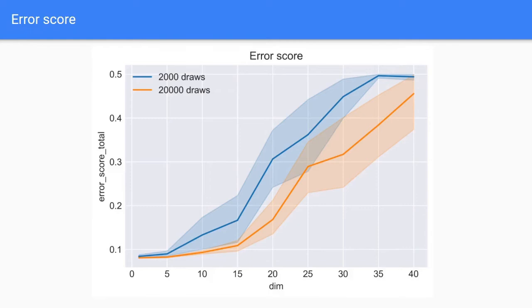If we know the target distribution we're trying to sample, what we can do is formulate an error score. Then we can calculate this error score from the set of samples, and this should give us an easy-to-visualize measure of the accuracy of the sampling. Of course, this can only be applied when we know for certain what's the target distribution we're trying to sample, so this can only be used in test cases.